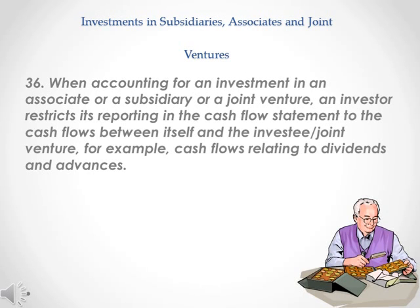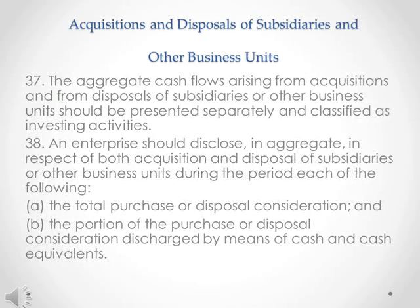Investments in subsidiaries, associates and joint ventures. Para 36. When accounting for an investment in an associate or a subsidiary or a joint venture, an investor restricts its reporting in the cash flow statement to the cash flows between itself and the investee or joint venture, for example, cash flows relating to dividends and advances.